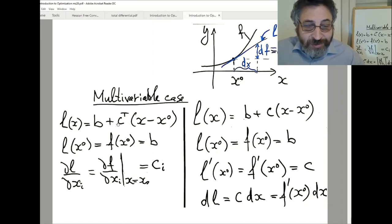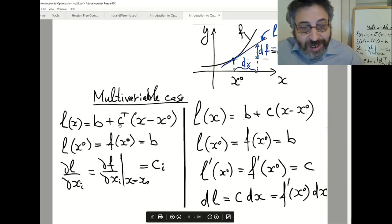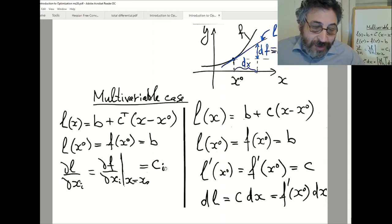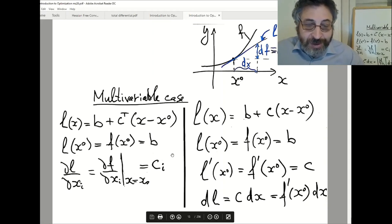And of course, partial derivatives of my linear function is, with respect to xi, just ci. Because what is written here is some ci multiplied by xi, plus constant. So the derivative of linear function is ci. So I conclude that ci is equal df by dxi.